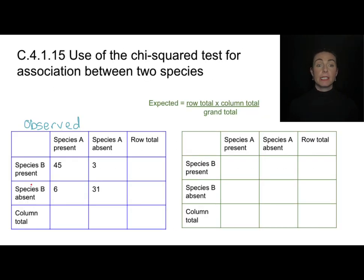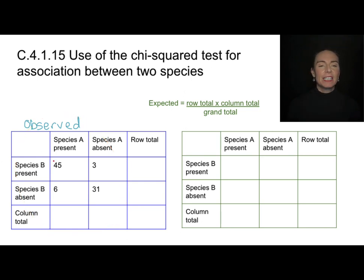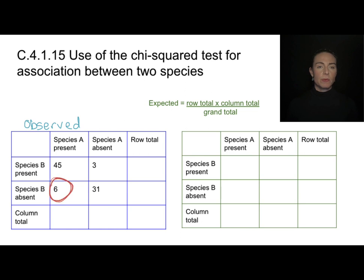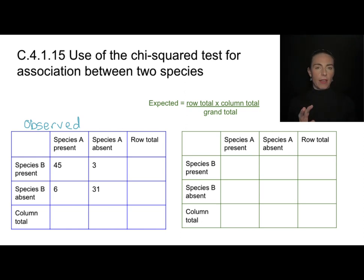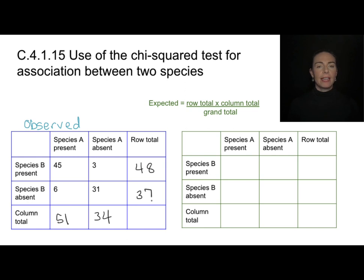Looking at observations for species A and species B: I had 45 quadrats where both were present, 3 where only species B was present, 6 where only species A was present, and 31 where both were absent. To determine whether they're associated, I find my row and column totals, then a grand total — that total should match whether adding by row or column.